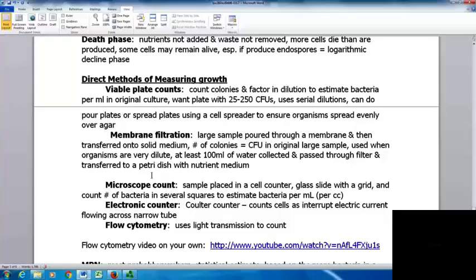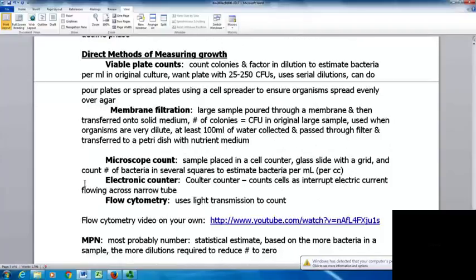If we want to count organisms, we have different methods. Typically, you don't want to just lay them all out and count when looking at hundreds of thousands of organisms. One way is viable plate count - you count colonies and factor in dilution to estimate bacteria per milliliter in original colonies. You do a series of dilutions, serial dilutions. These can be done using pour plates or spread over a plate. You use a cell spreader to ensure organisms get spread evenly over the agar. Then you want a plate with between 25 and 250 colony forming units. You look at the dilution factor and multiply the number of cells times dilution factor to determine how many cells per milliliter in the original culture.